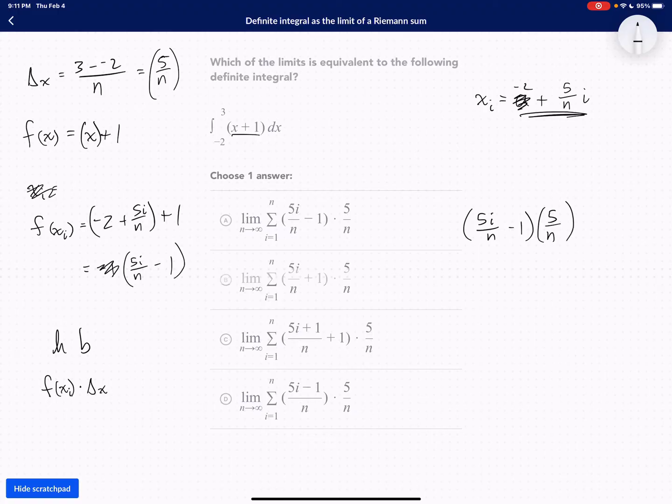All right, do we have anything like that? I see 5 over n, this guy on all of them. And I see 5i divided by n minus 1 in this one. And that's it.